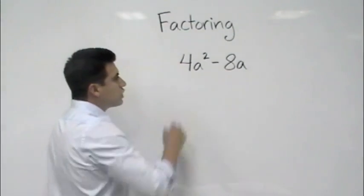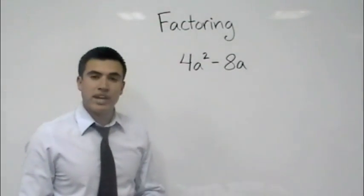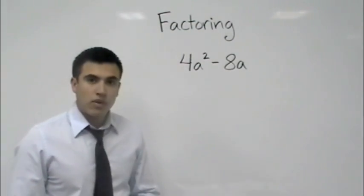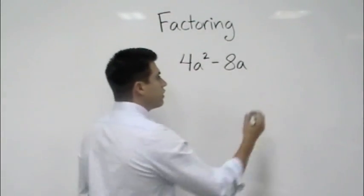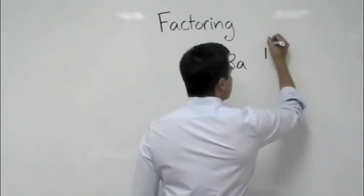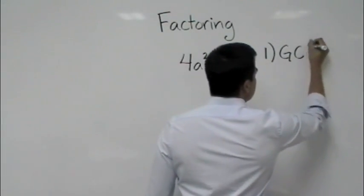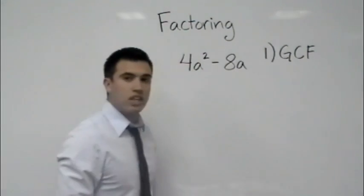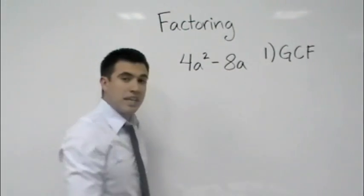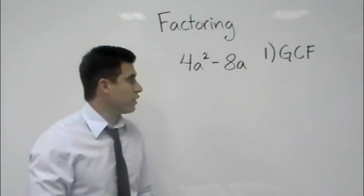We have 4a² - 8a and you might get asked to factor this binomial. Well, there's one thing you want to pay attention to first, and that is finding the GCF. We want to find the greatest common factor of each term. That's something we want to do first all the time.